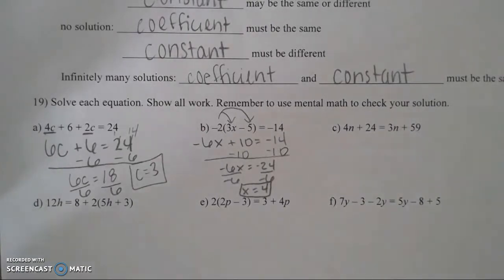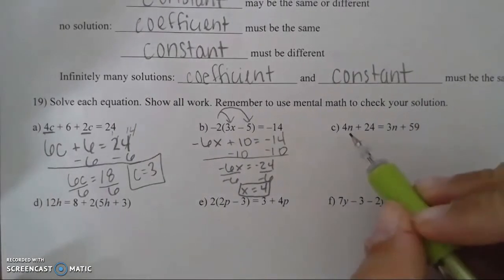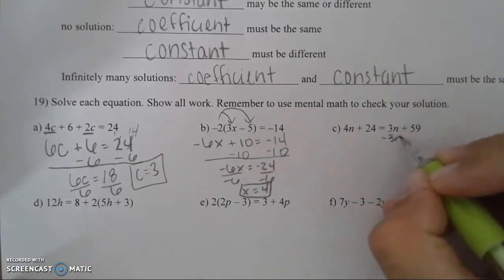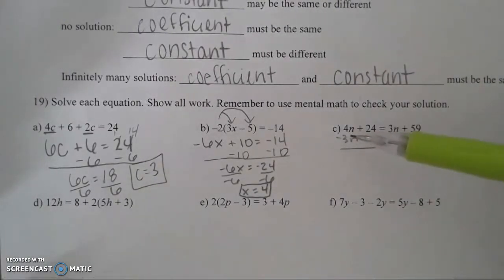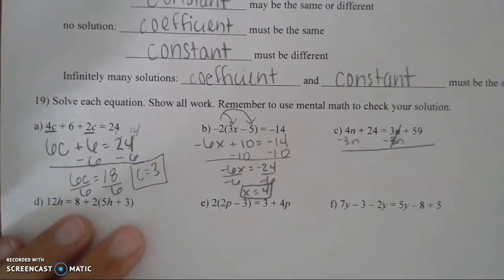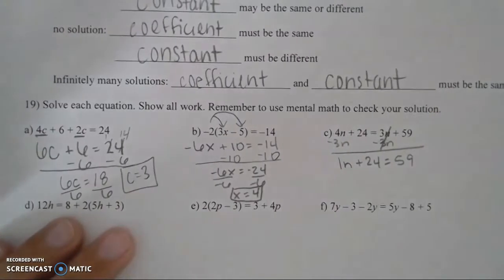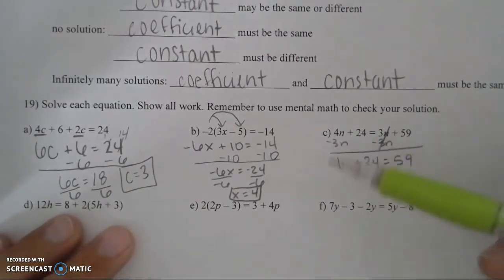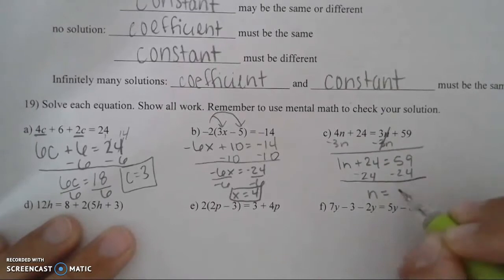For problem C, we have variables on both sides of the equal sign, so we use the opposite property to get them all on one side. I'll move the 3n to the left side — the opposite of positive 3n is negative 3n, so subtract 3n on both sides. Remember, you subtract it with the like term 4n — you cannot subtract 3n from 24 because they are not like terms. The 3n cancels, leaving 1n plus 24 equals 59. Subtract 24 on both sides to get n equals 35.